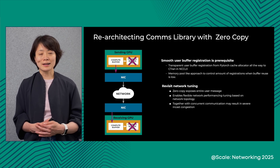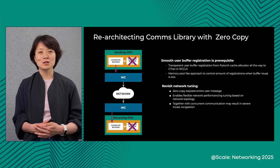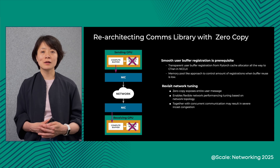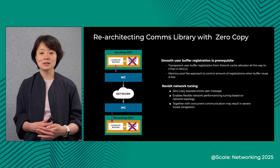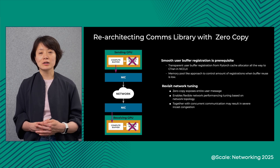For the transport side, zero-copy also exposes the entire message to the transport layer, so we can more flexibly control load balancing — such as packet splitting based on network topology and latencies with each different destination peer.